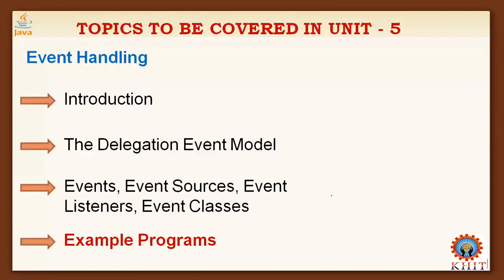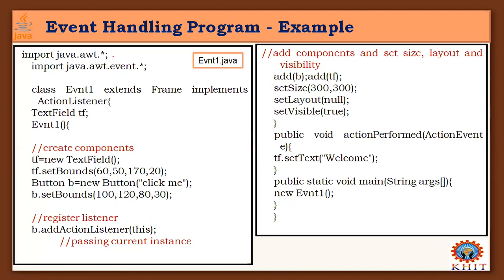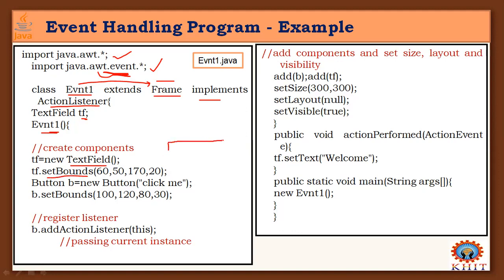Coming to the example programs, let me show you how these events can be handled. Consider one simple example: the class EventOne extends Frame and simultaneously implements the ActionListener interface. So this class extends Frame and implements ActionListener. Inside this class there is a TextField and a constructor, where I will show you the process of creating the event components.